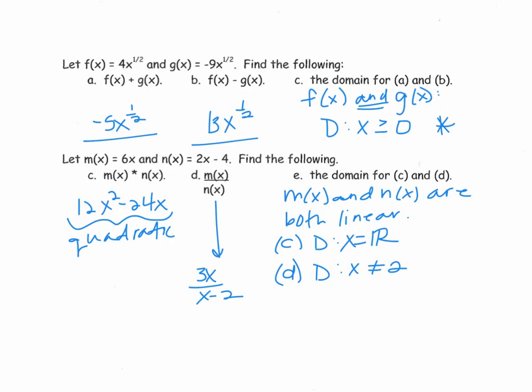For c and d down below, m of x and n of x, they're both technically linear. When we took their product, it became quadratic, but we could still plug in anything we wanted for x. That's why our domain was all real numbers, or that symbol that I wrote on the other side. And that last one, when we divide them, even though they're linear originally, in that fraction the denominator can't equal 0. And that's why the domain for that last quotient was x cannot equal 2.